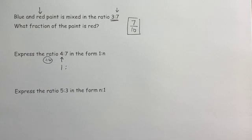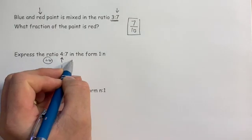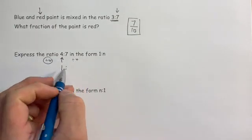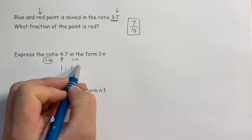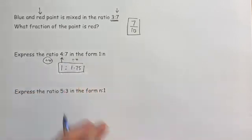Which means I must do exactly the same on the other side. The seven parts needs to be divided by four. So if I divide that by four as well then you see that we'll get one point seven five. So the ratio in the form of one to n would be one to one point seven five.